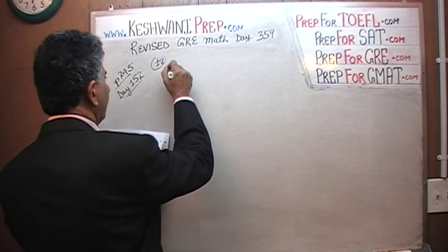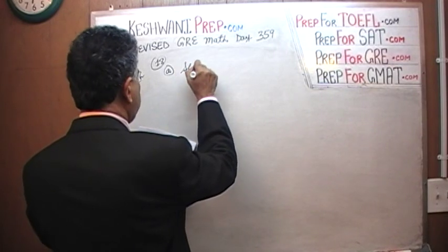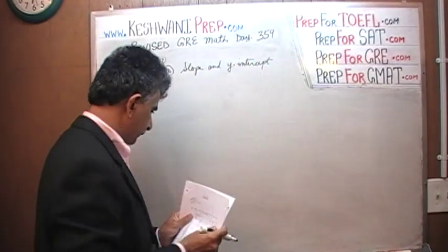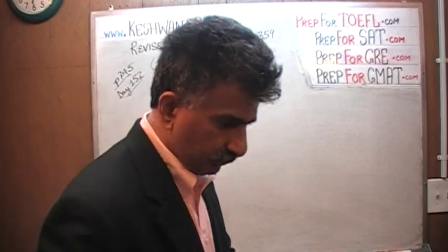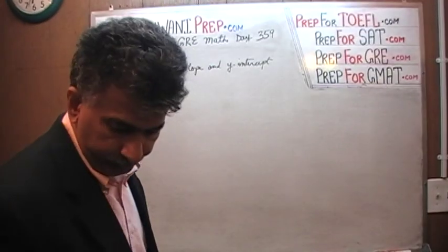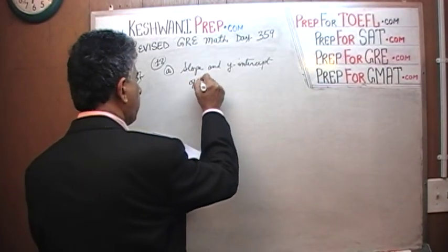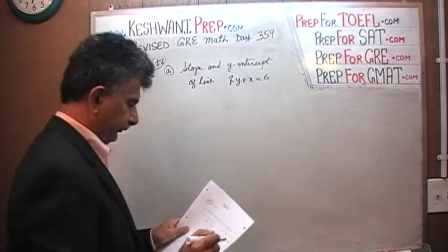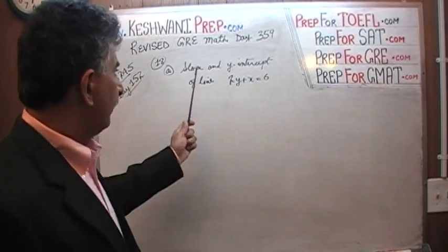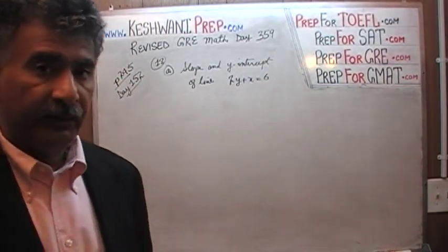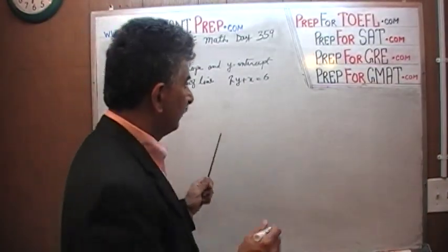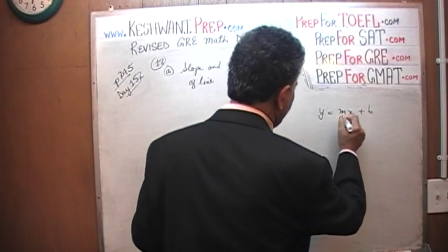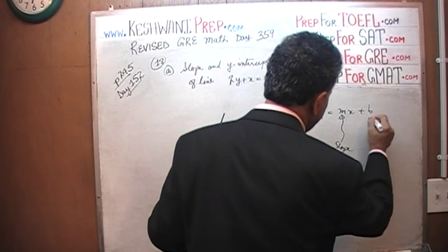Problem 18, part A asks us for the slope and Y-intercept of the line 2Y plus X equals 6. In order to find the slope and Y-intercept, it will be easier to write this in slope-intercept form. The slope-intercept form looks like this: Y equals MX plus B, where M represents the slope and B is the Y-intercept.